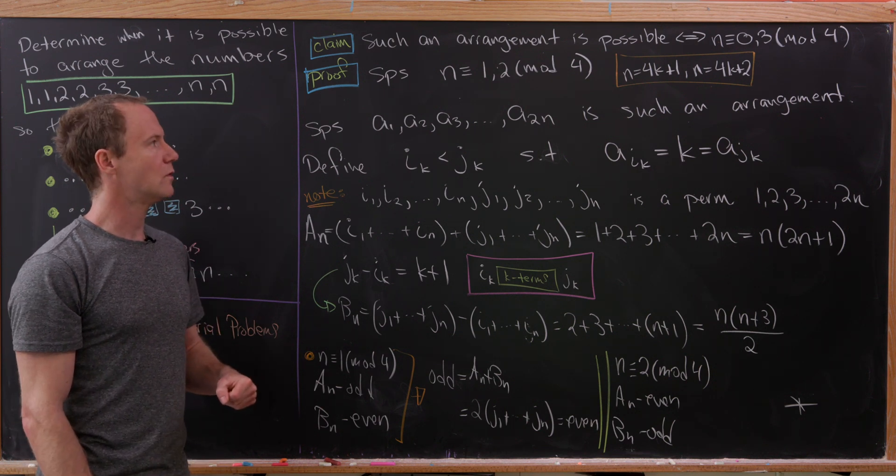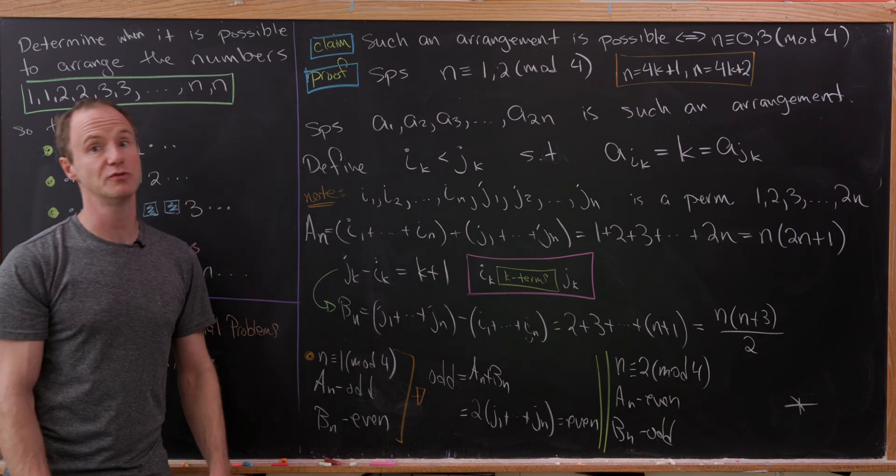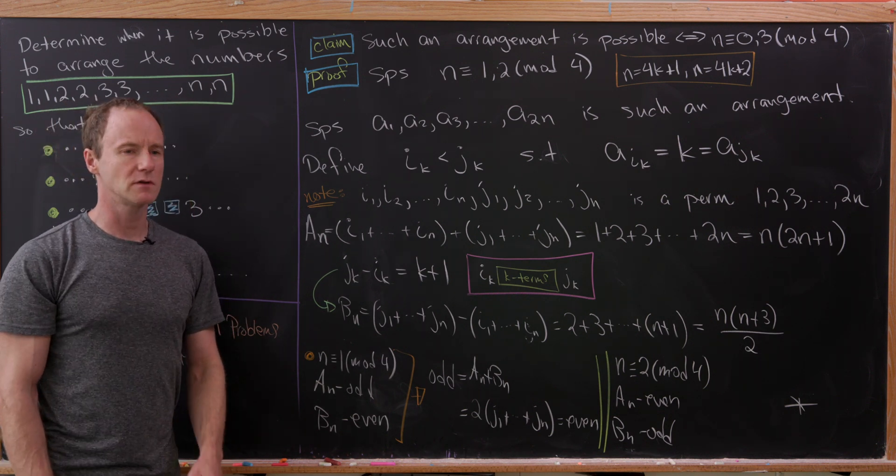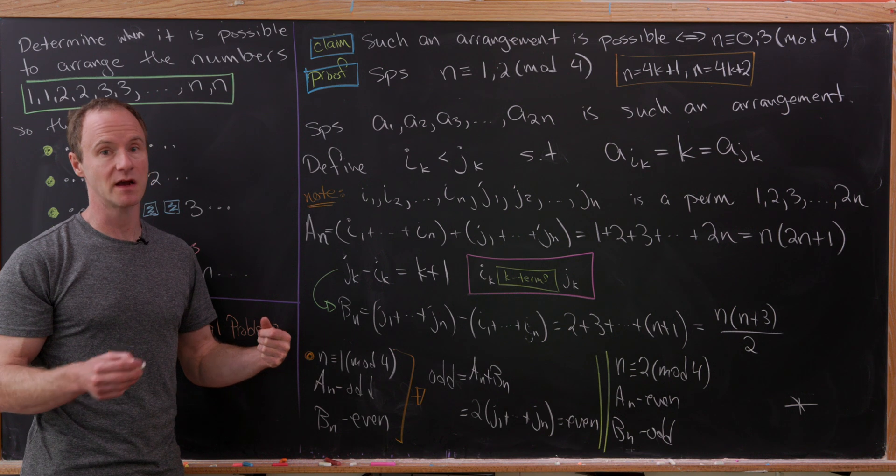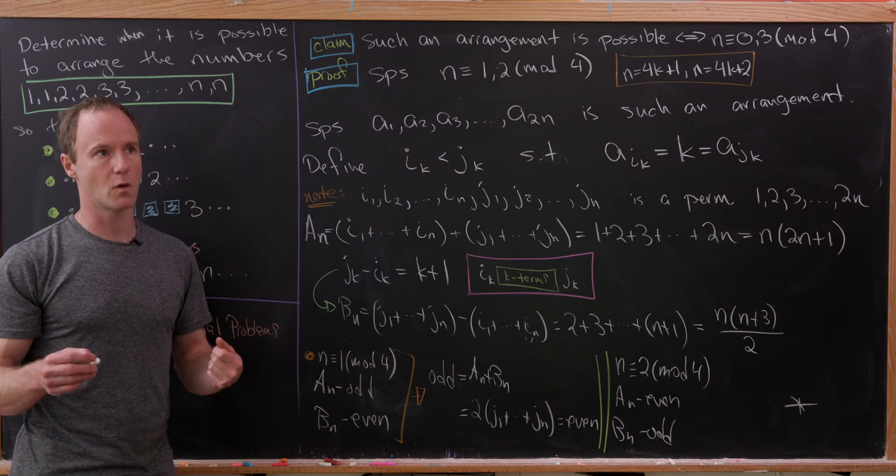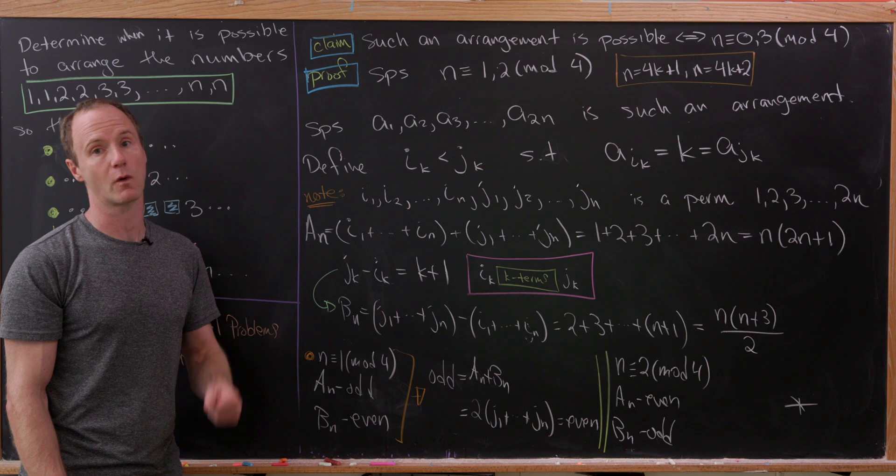This contradicts our ability to have such an arrangement in this case. So we showed that it's not possible if N is 1 or 2 mod 4. Now I'll just jump to a board with us exhibiting the possibilities or the proper arrangements in the case that N is 0 or 3 mod 4.